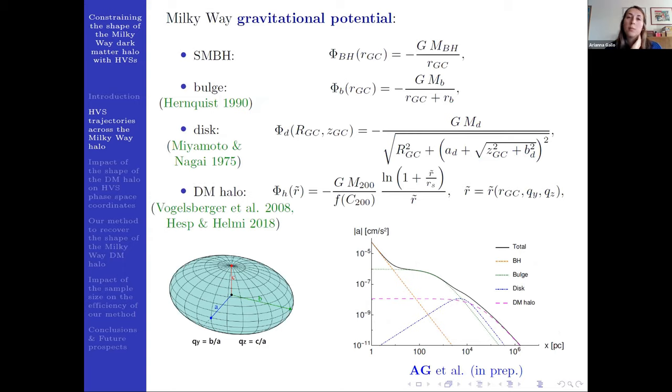We choose to model our gravitational potential with the sum of the contribution of the supermassive black hole, the spherical Hernquist bulge, the Miyamoto-Nagai disk which is axisymmetric with respect to the z-axis, and the triaxial dark matter halo, in which the degree of triaxiality depends on the axis ratios q_y and q_z that are the flattening or elongation along the y and z axes.